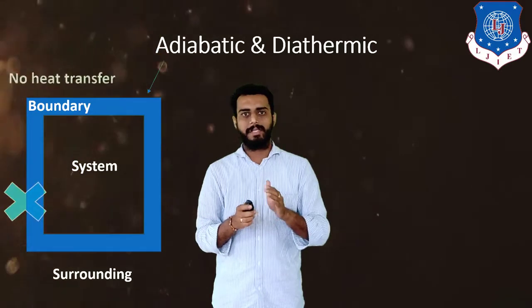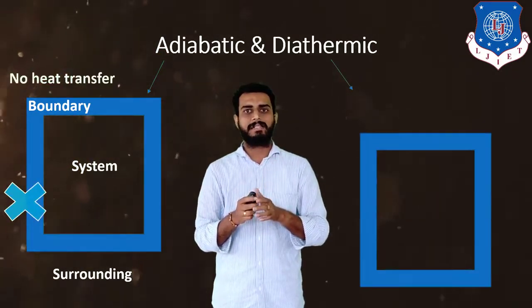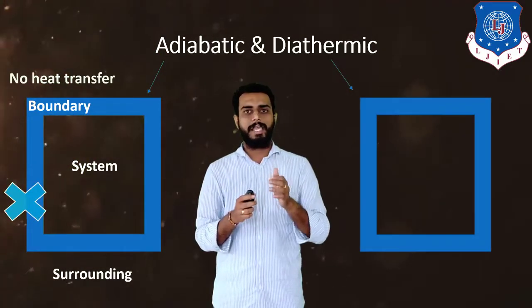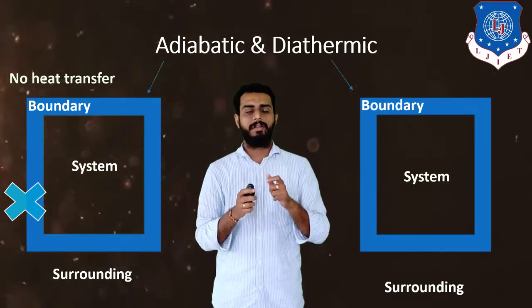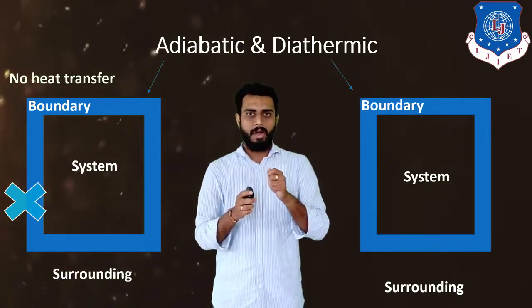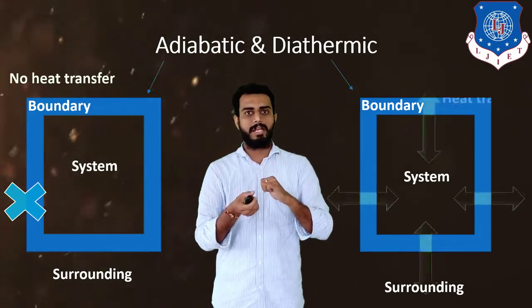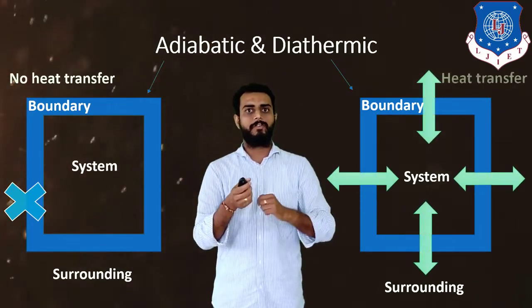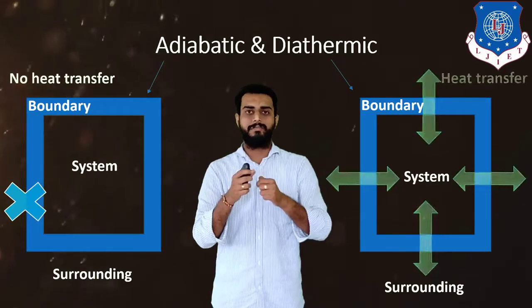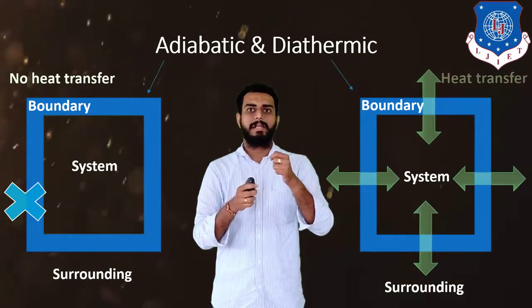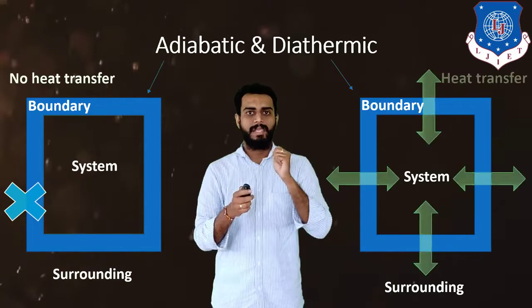The other term is diathermic. Consider again a system and surrounding with a boundary. Diathermic means heat can transfer from the system to the surrounding, or from the surrounding to the system. That kind of boundary or system is known as a diathermic boundary or diathermic system.